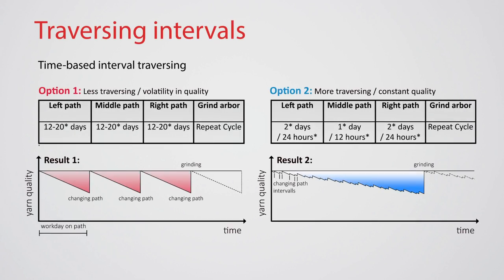The spinner can choose between various traversing intervals. Option 1 shows slower intervals. The roving runs in one of the three channels for 12 to 20 days before switching to another one. This results in less traversing and less effort. The yarn quality will get worse consistently until the switch to the new channel, then it starts at the best quality again.